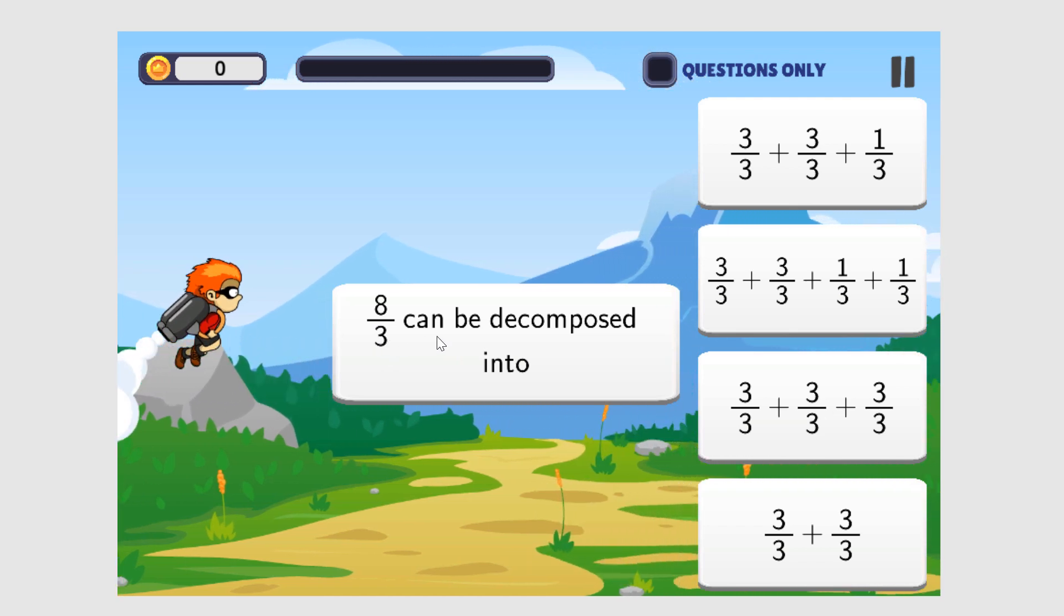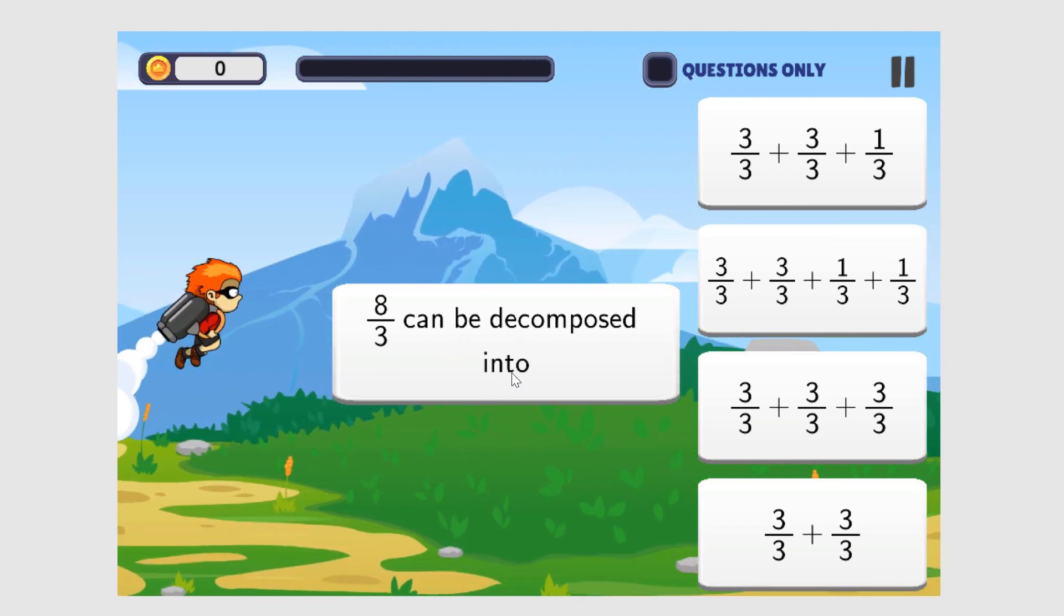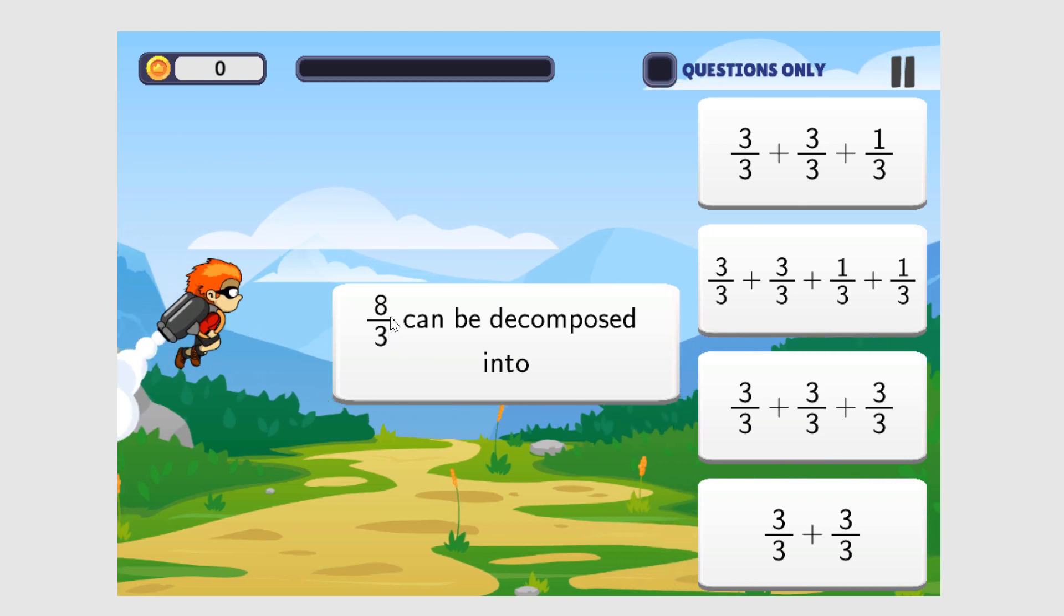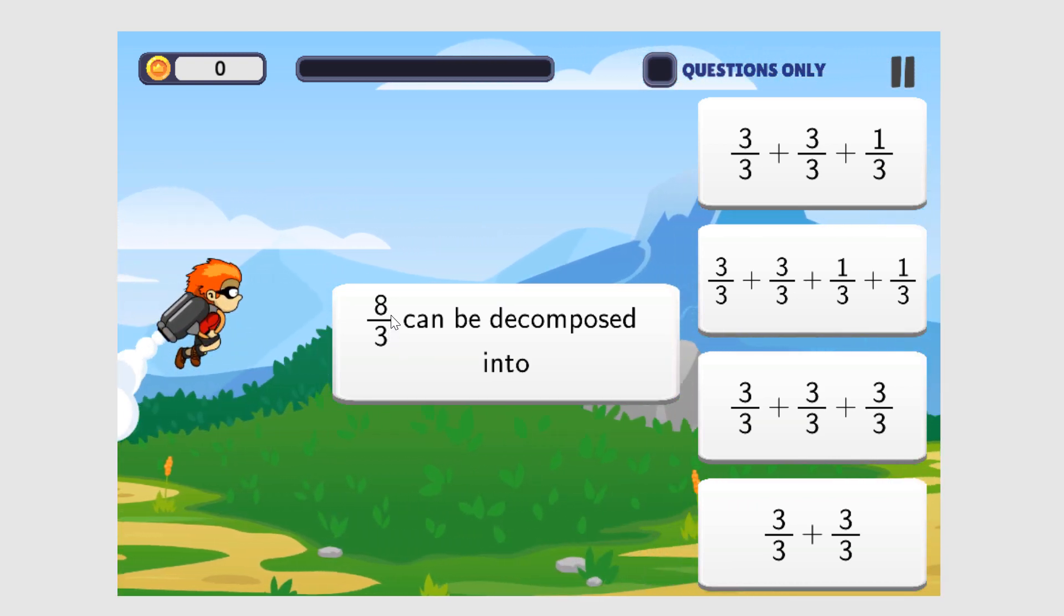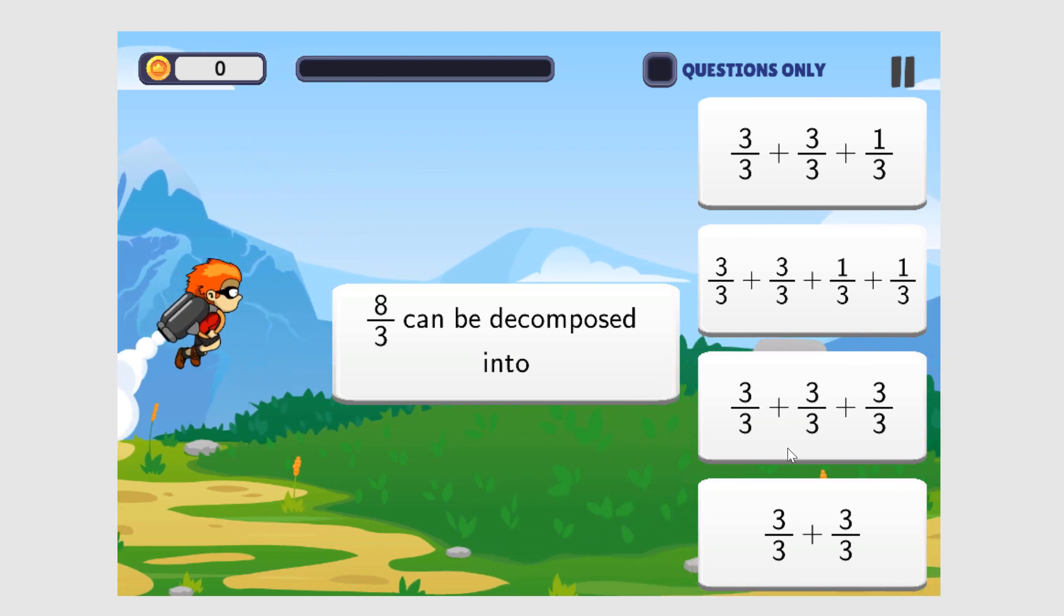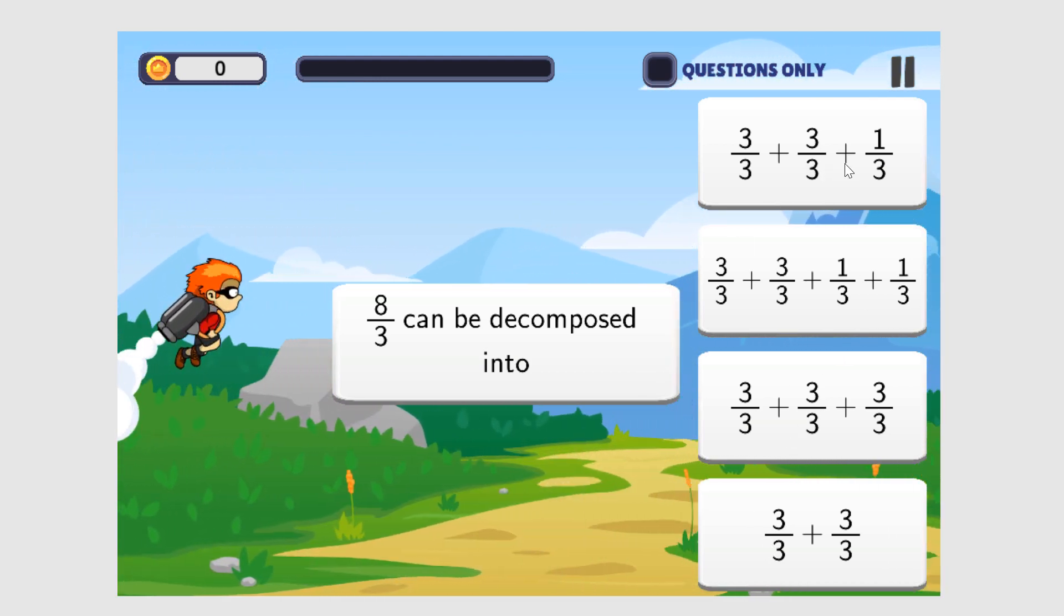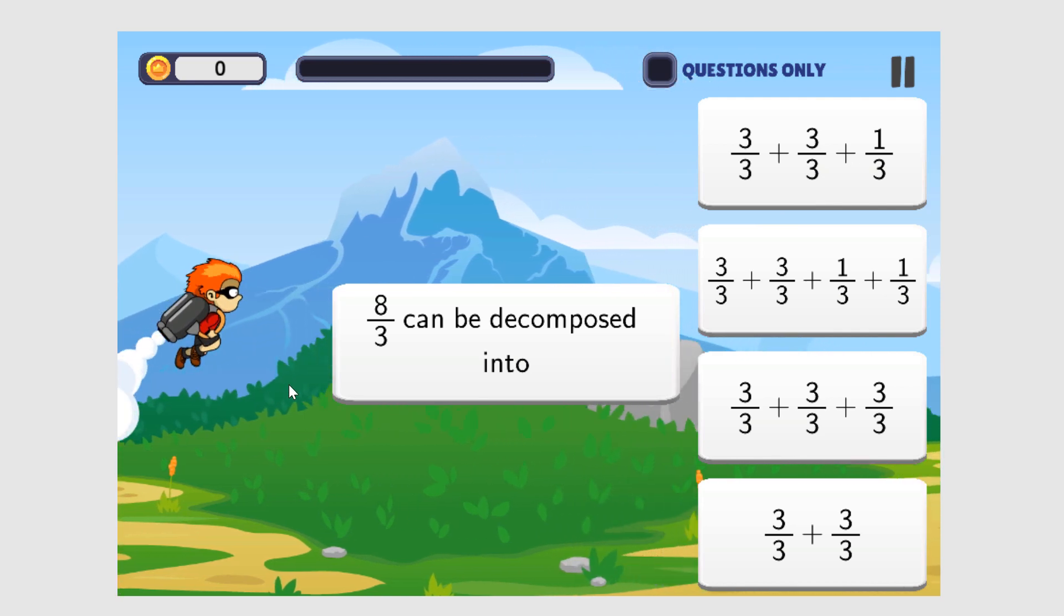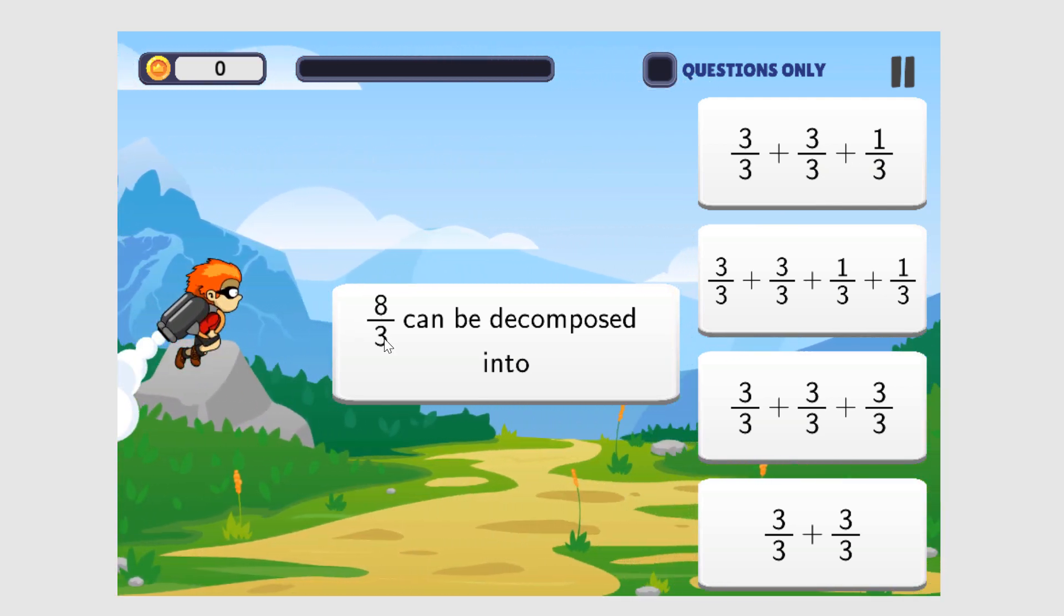Eight-thirds can be decomposed into... Now, when we decompose a number, we want to break it up into smaller numbers. And if we look at the answers here, we can see that these numbers added together should equal eight-thirds, eight over three.